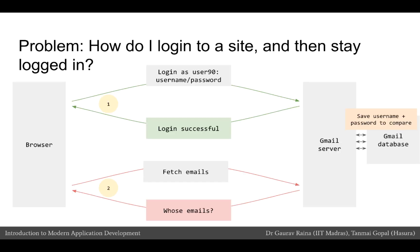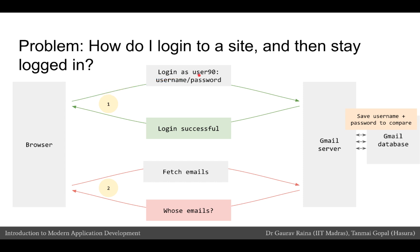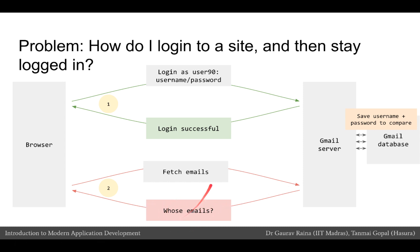On the left we have a browser. The browser first goes to the login page and makes a login request - let us say user 90 is trying to login. User 90 sends a username and a password to the Gmail server. The Gmail server checks with the database to see if the username and password are accurate, and if the password matches, the Gmail server returns a successful login response. Then the browser sends a fetch email request - but how does Gmail know whose emails to respond with? How does the Gmail server know whether this is the same person who made the login request?